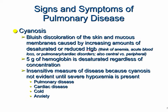5 grams of desaturated hemoglobin produces cyanosis regardless of concentration. Remember it's an insensitive measure to disease because cyanosis is a late-stage finding — it won't be evident until there's severe hypoxemia. Causes include pulmonary and cardiac disorders, exposure to cold, or acute anxiety, where the sympathetic nervous system causes shunting of blood to major organs and fingers may appear dusky.